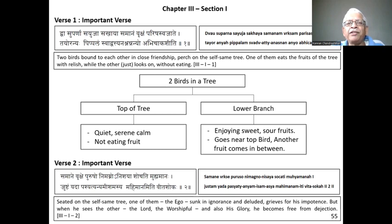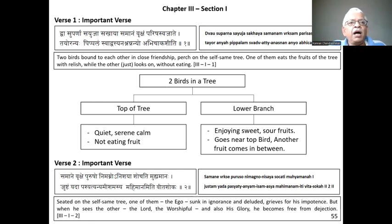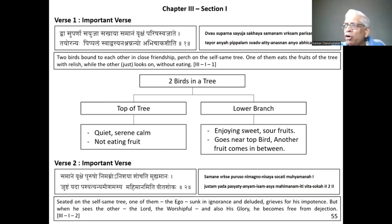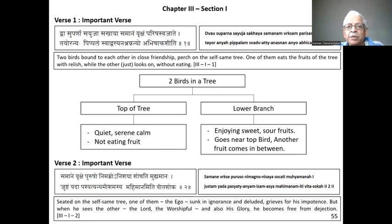The third chapter, which we are now entering, has two sections. This section also has important verses: the first and second verse in the first section, and the sixth and ninth verse in the second section. Mundaka Upanishad is extremely famous — if you buy this book from Chinmaya Mission or any other source, you will find two birds on the front cover, and that is because of this verse.